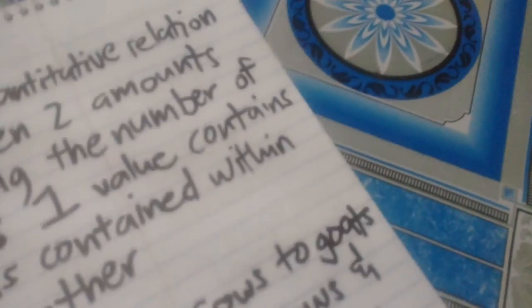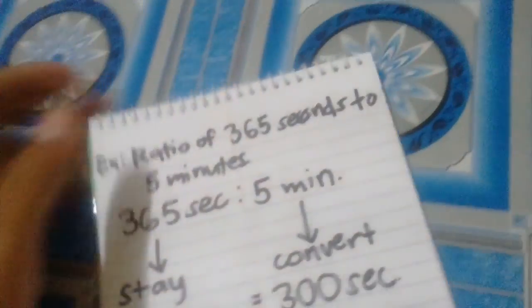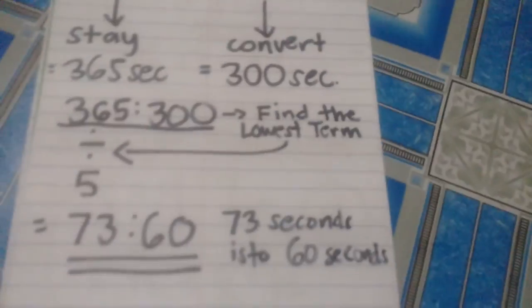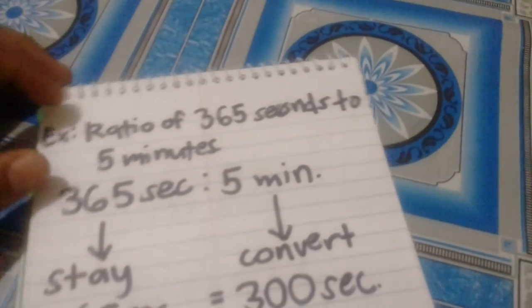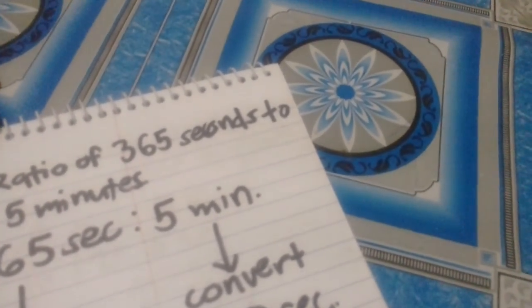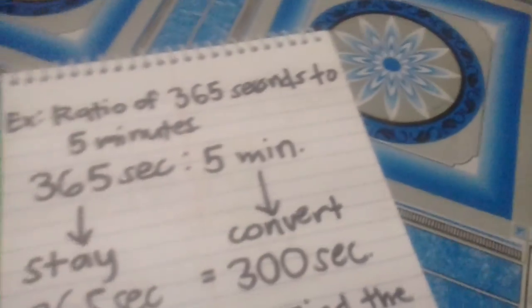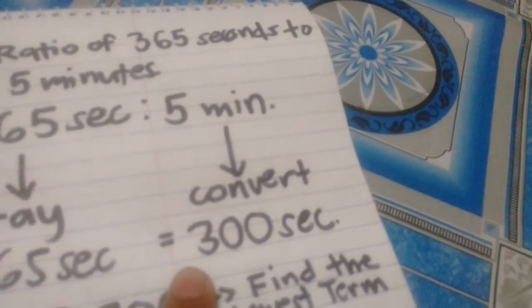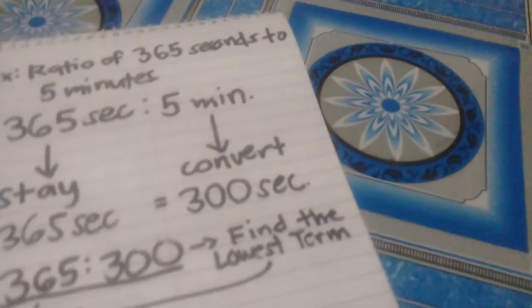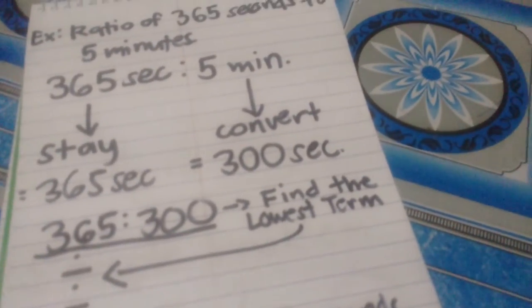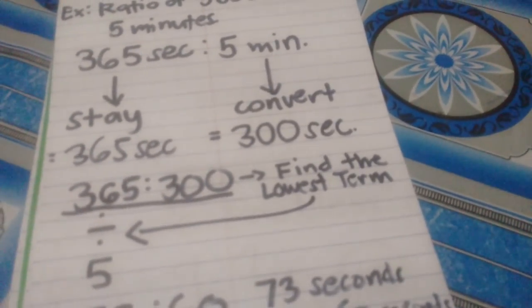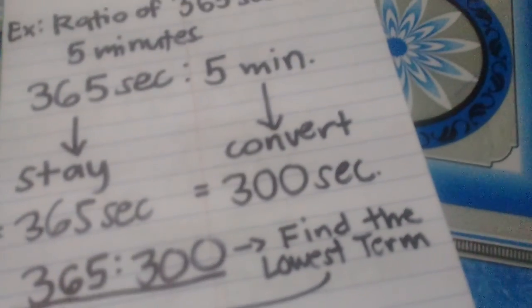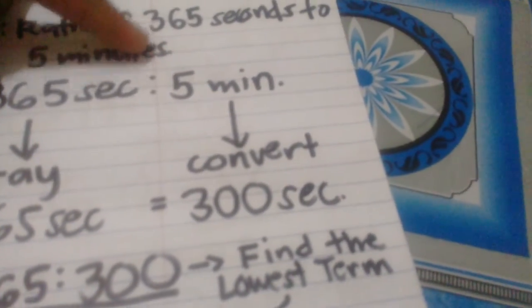Here's an example of a ratio that needs to be converted to find the final answer. 365 seconds is to 5 minutes. 365 seconds should stay the same, while the 5 minutes should be converted into 300 seconds, the lower unit, so that they can both be in seconds. What I got here is 365 is to 300, because 5 minutes equals 300 seconds, and 1 minute equals 60 seconds, so 60 times 5 is 300.